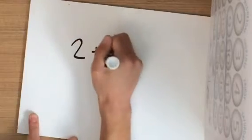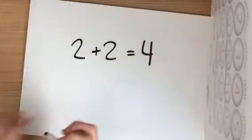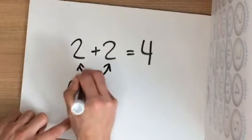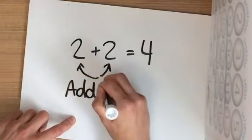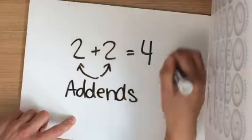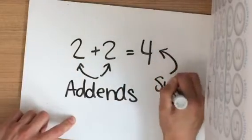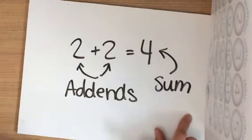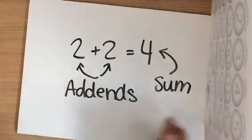Just in case you forgot, if I'm adding 2 plus 2 equals 4, these two numbers here are my addends, and this right here is my sum. So I have two numbers, two things that I put together to make my sum. 2 plus 2, these are my addends, 4 is my sum.